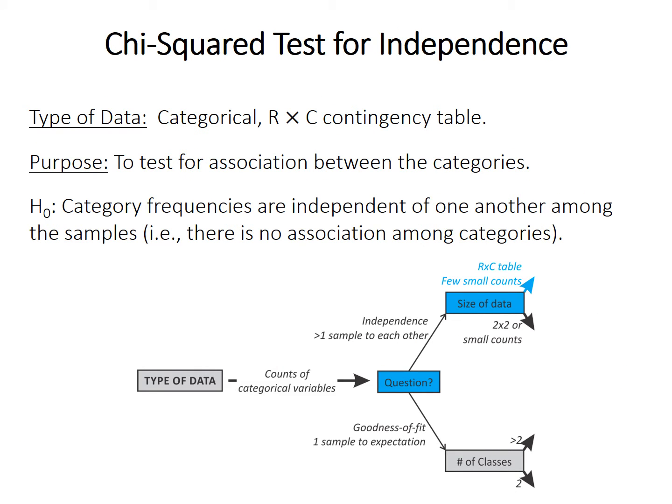The chi-squared test for independence requires categorical data in the form of a contingency table, and can accept any contingency table with R rows by C columns, where R is 3, 4, 5, or more, and C is whatever number.